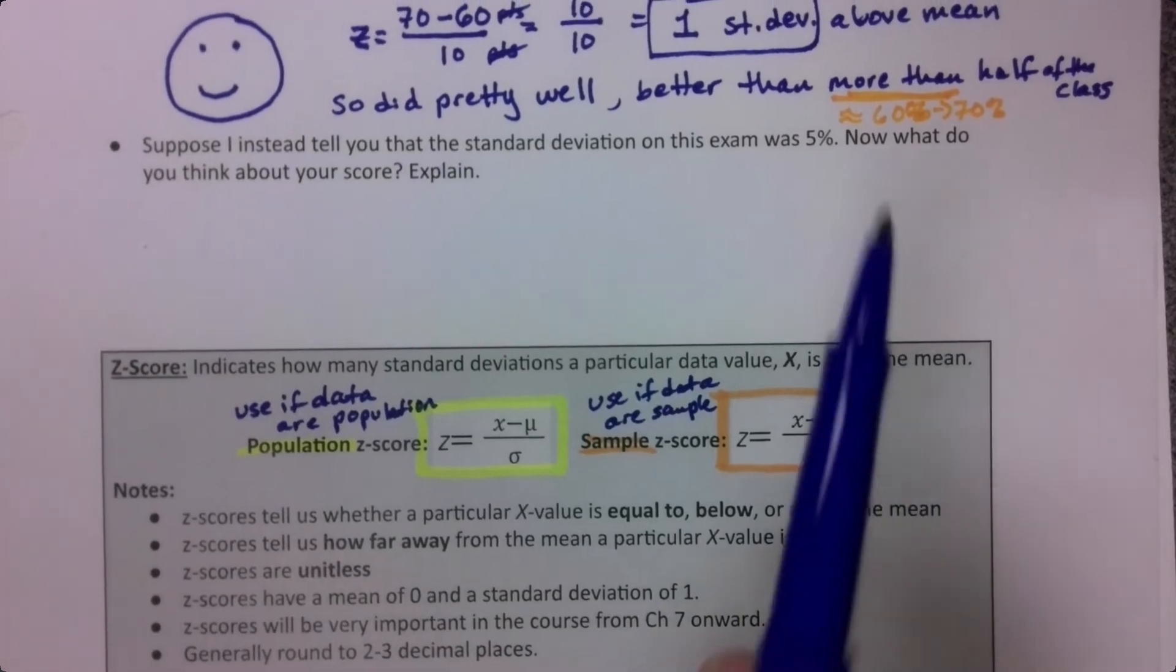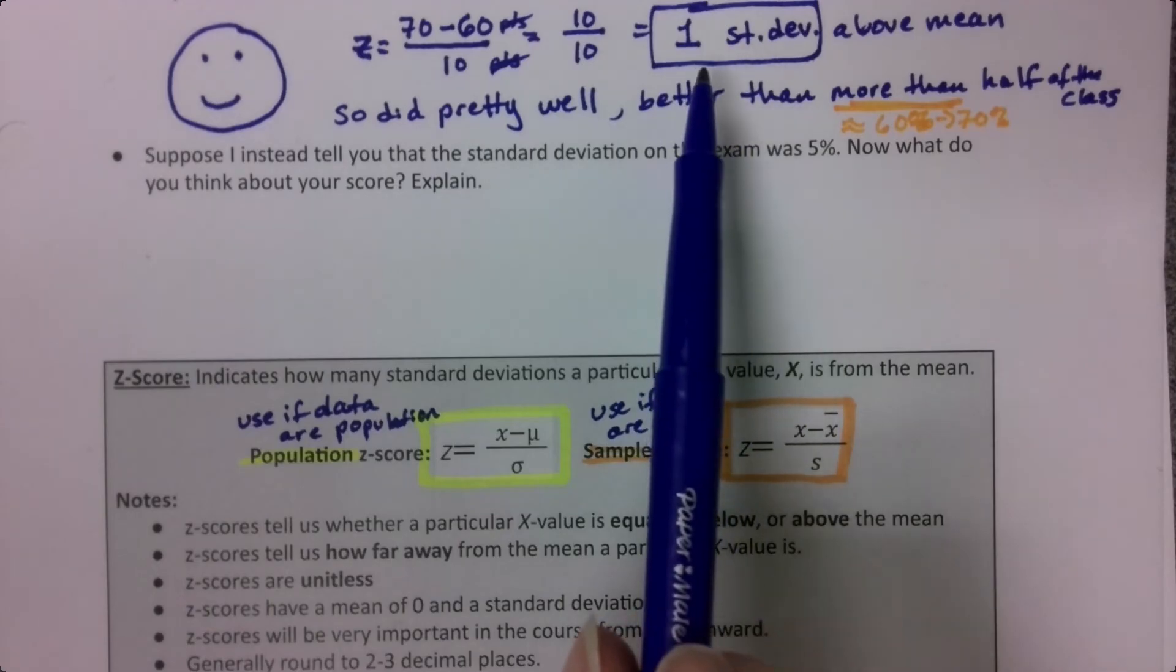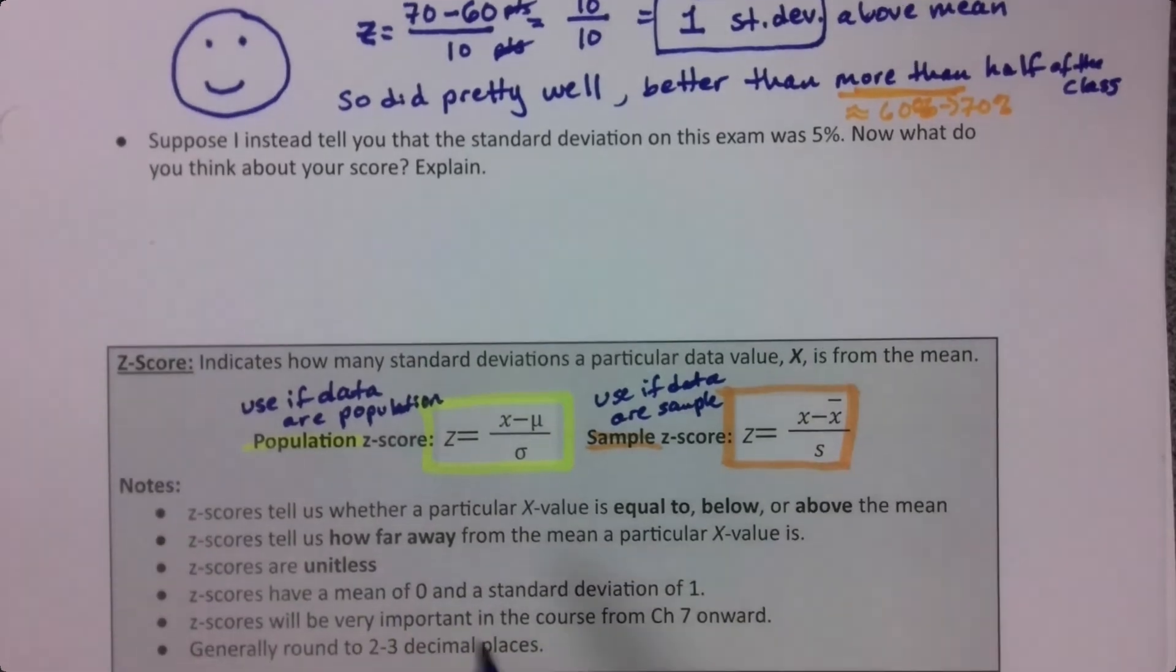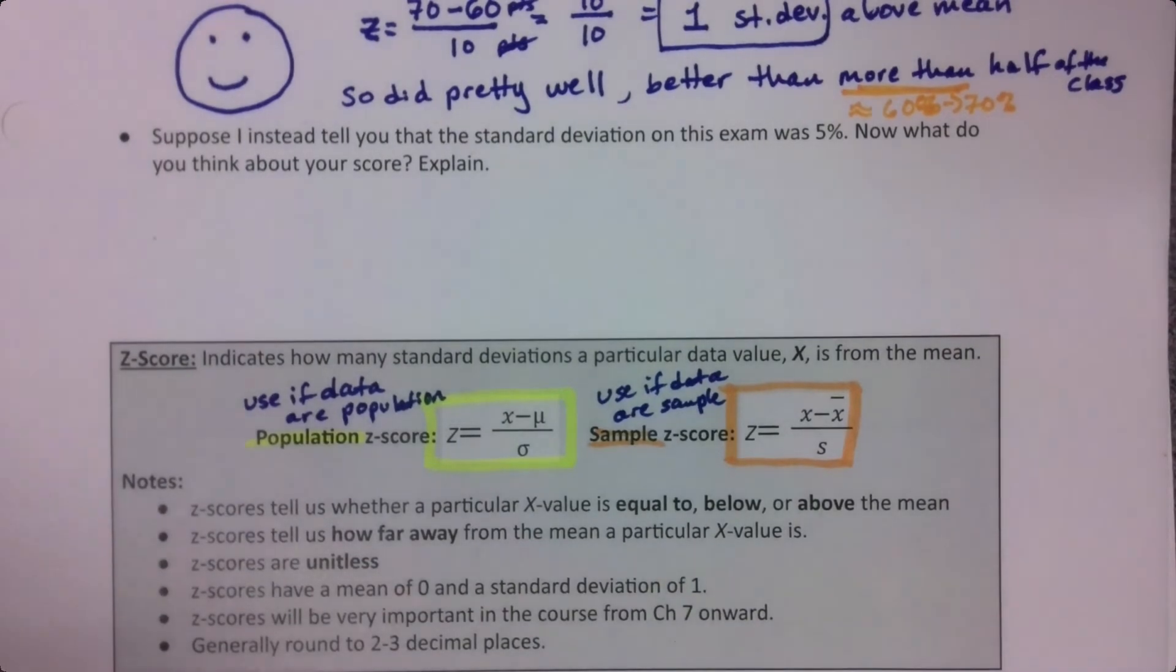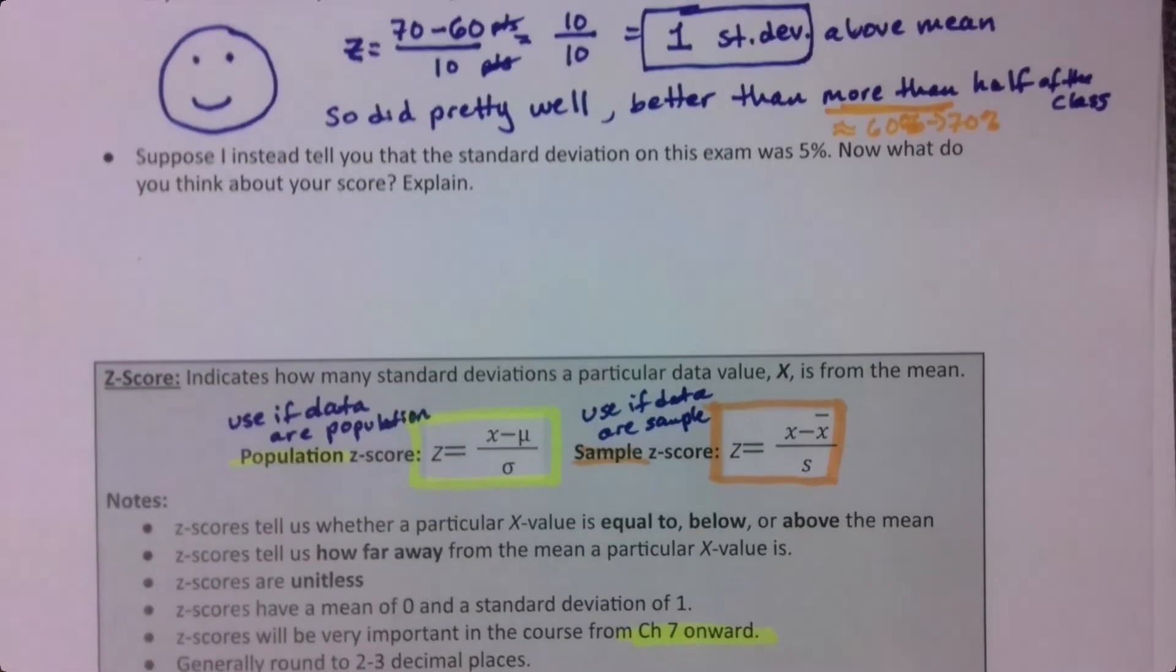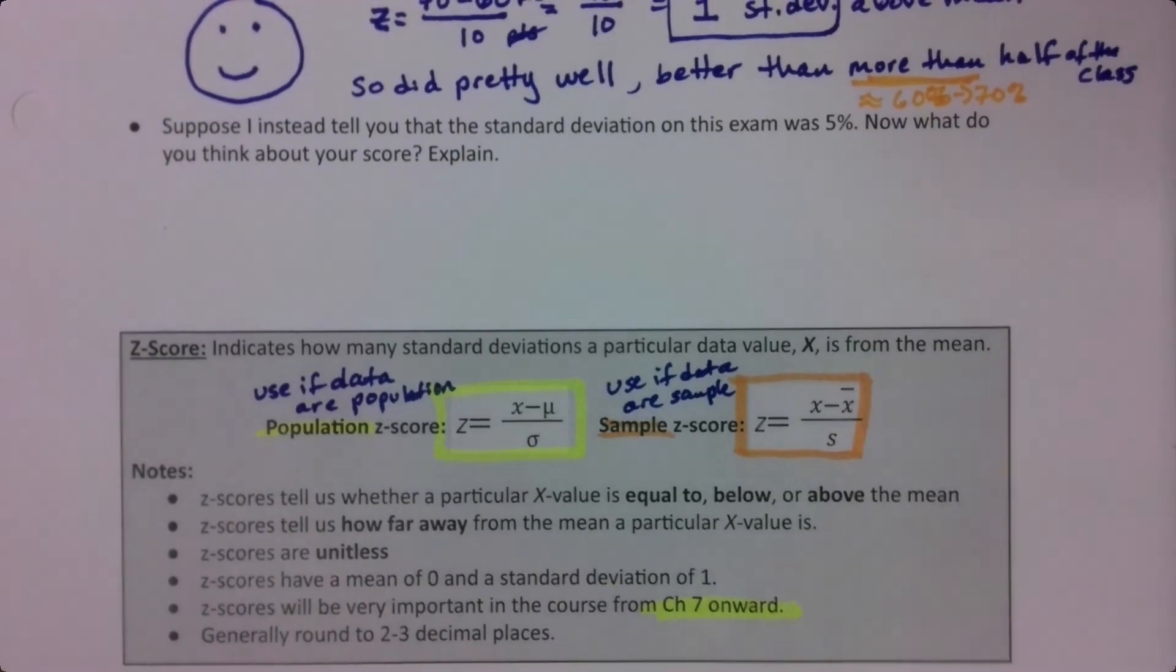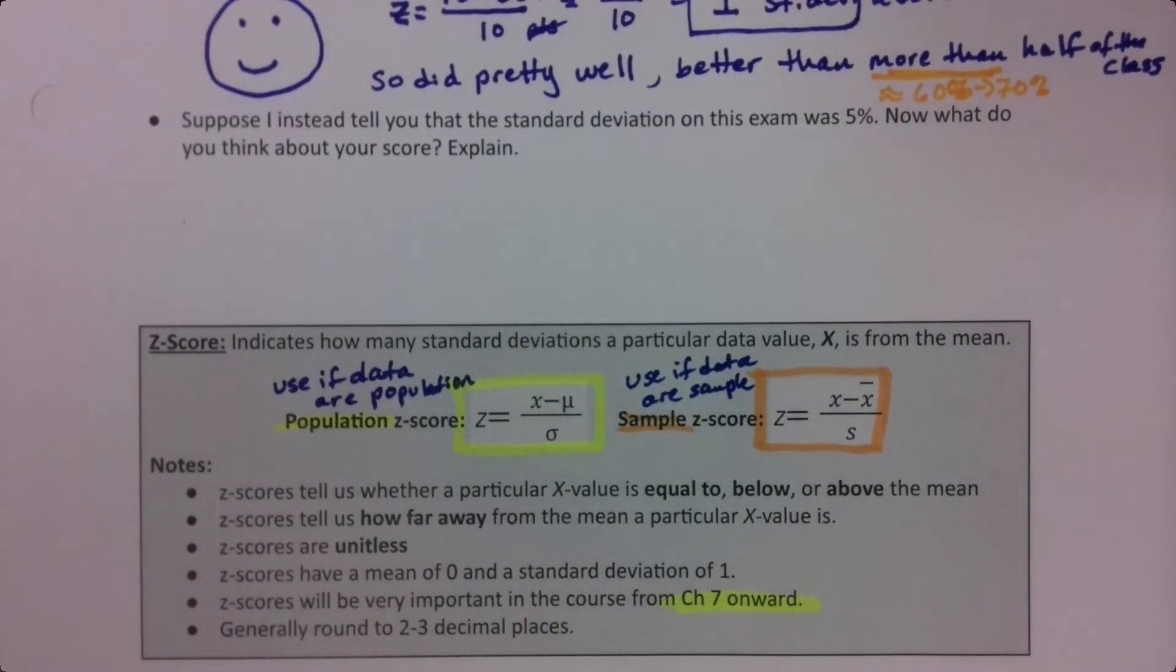Now we can also tell that this value is telling us how far above the mean we are. So we can see we're one standard deviation above the mean. We see it has no units. Z-scores in general have a mean of zero and a standard deviation of one. I'll talk about that in a second. And they're very important. From chapter seven onward, they're a very big deal. We will run into them again in chapter seven and chapter nine and chapter 10, particularly. Generally, we round z-scores to two decimals, two to three decimal places.